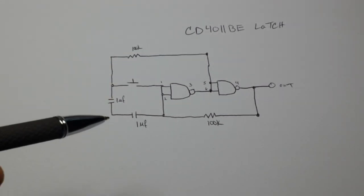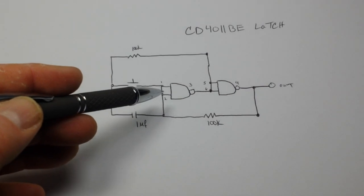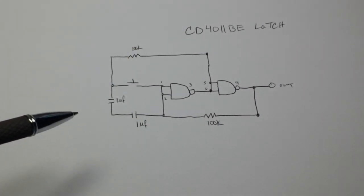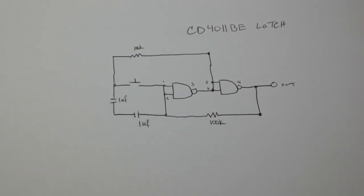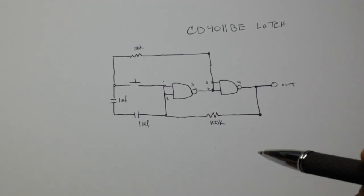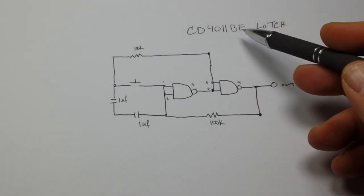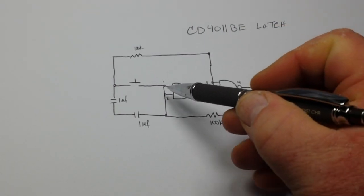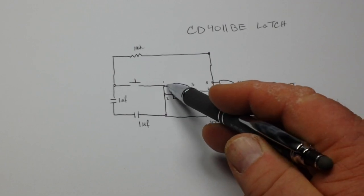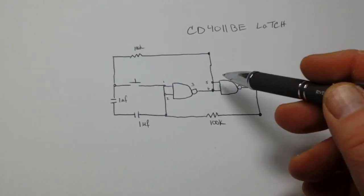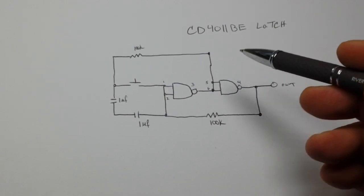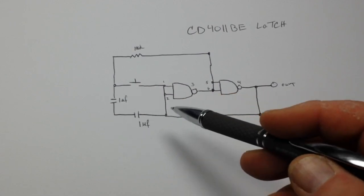Basically we're using two NAND gates and a toggle push button to switch an output high and low. It's really simple, so we're using the CD4011BE and we're using the first gate which are pins one, two, and three, and the second gate which are pins five, six, and four, and then just a couple capacitors, a couple resistors.